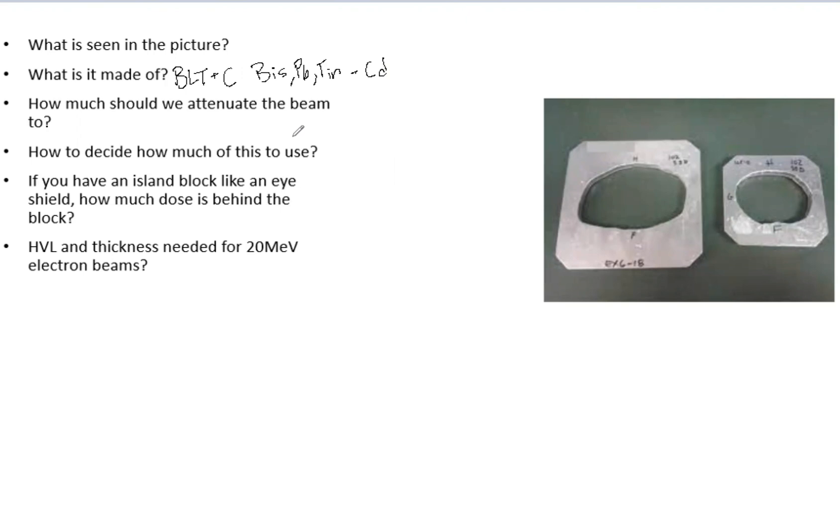So how much should we attenuate the beam to? We want to attenuate this beam that we are blocking with the Cerrobend block to around 5%. So that means the beam is 5% as strong as it was initially after it passes the Cerrobend block. For example, for a 6X, now granted this is photons, a lot stronger, a lot deeper penetration, we're going to need somewhere on the order of 8 cm of Cerrobend for that. That's a whole lot. Thankfully, most of the time we use these for electrons. So you're going to need a lot less.